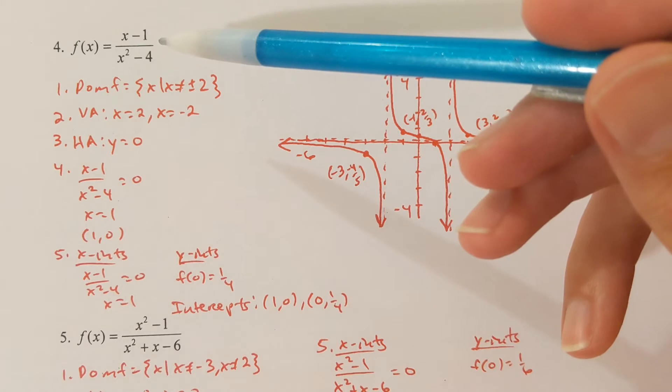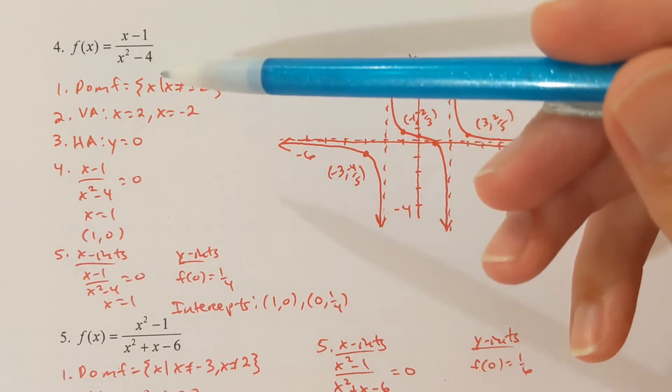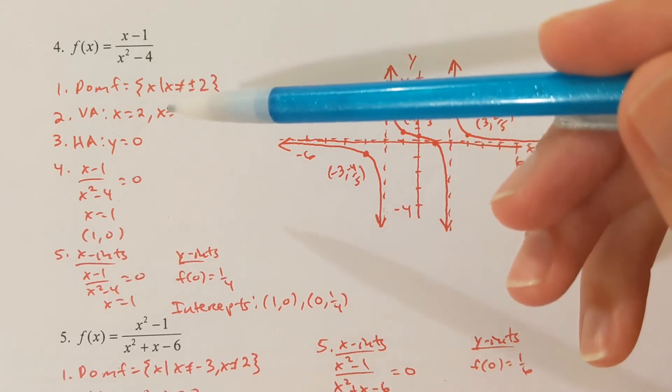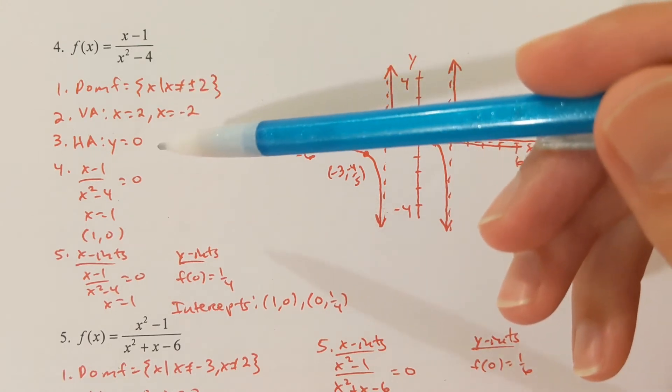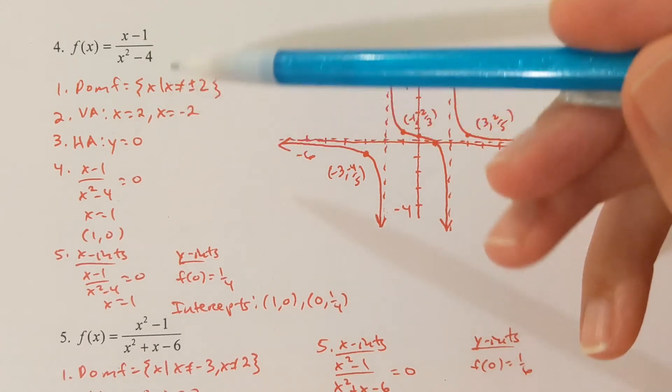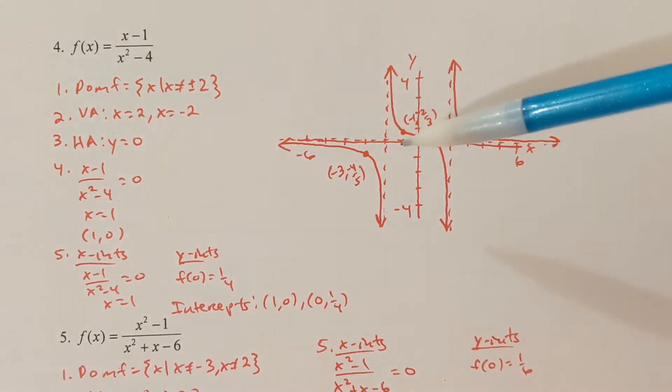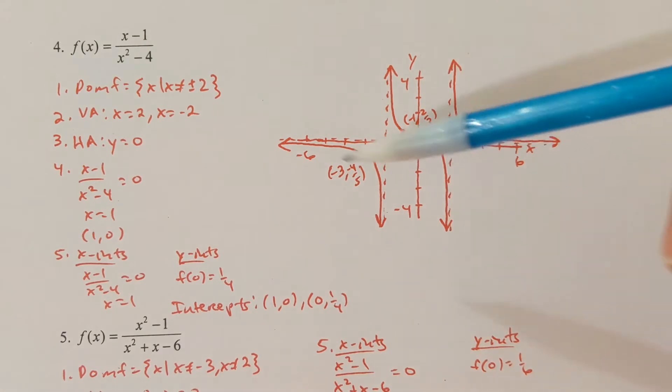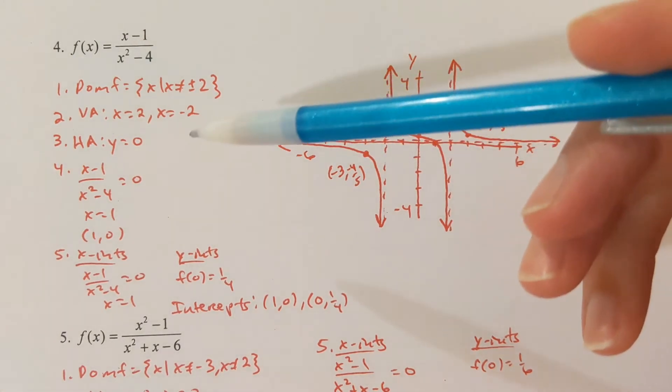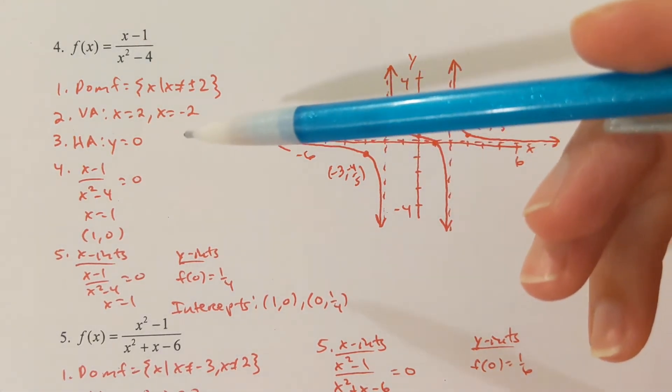Because the degree of the top is less than the degree of the bottom, y equals 0 is a horizontal asymptote. There is no work to do — I simply write y equals 0.